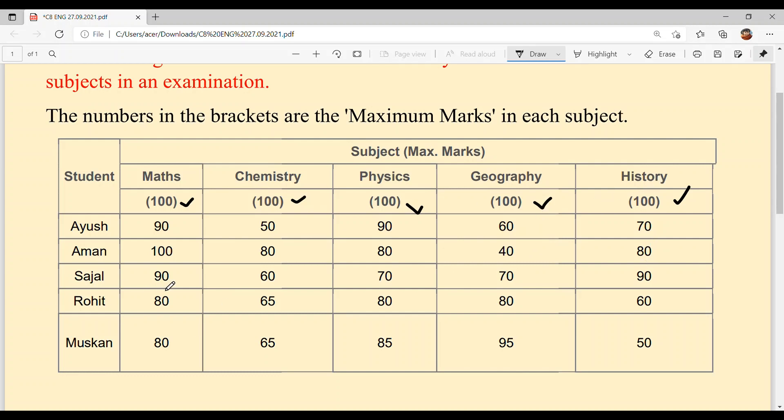Sejal got 90 out of 100 in Maths, 60 out of 100 in Chemistry, 70 out of 100 in Physics, 70 out of 100 in Geography, and 90 out of 100 in History. Rohit got 80 out of 100 in Maths, 65 out of 100 in Chemistry, 80 out of 100 in Physics, 80 out of 100 in Geography, and 60 out of 100 in History.